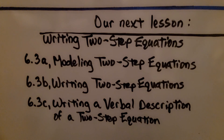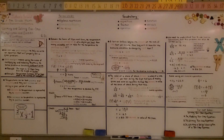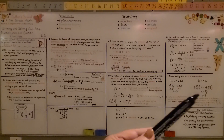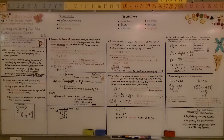We're finished with lesson 6.2, and we're going to move on to 6.3, which is about writing two-step equations. We can solve one-step multiplication and division equations using an inverse operation — the opposite operation. If we see multiplication, we can try division, or if we have a fraction, we can multiply by the reciprocal. All we're trying to do is isolate the variable to find its value.